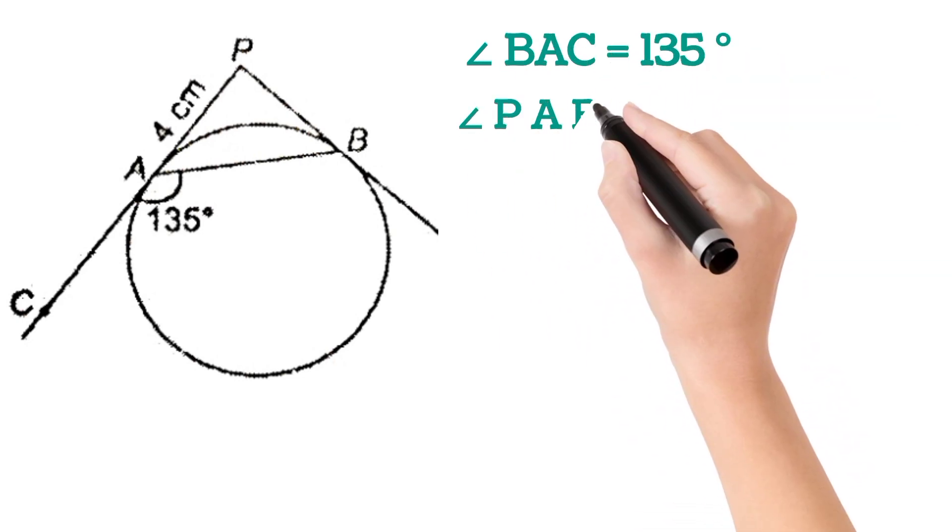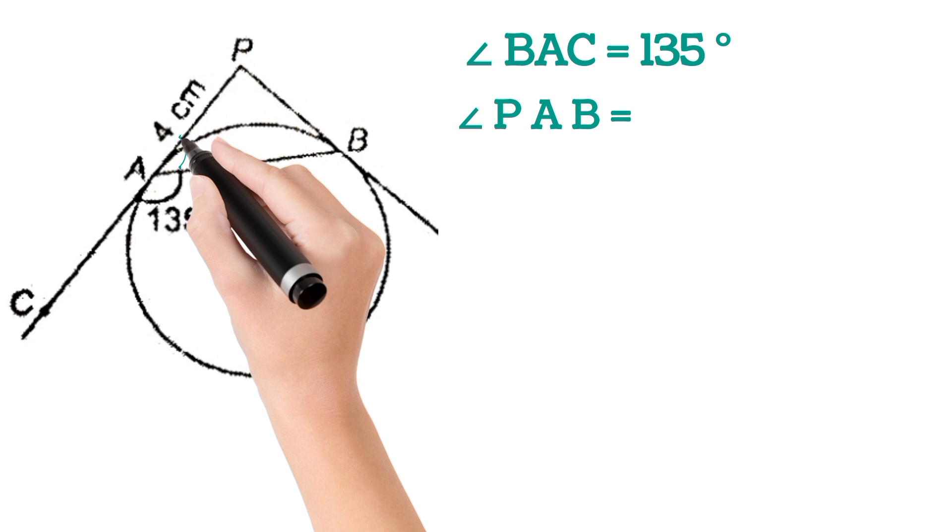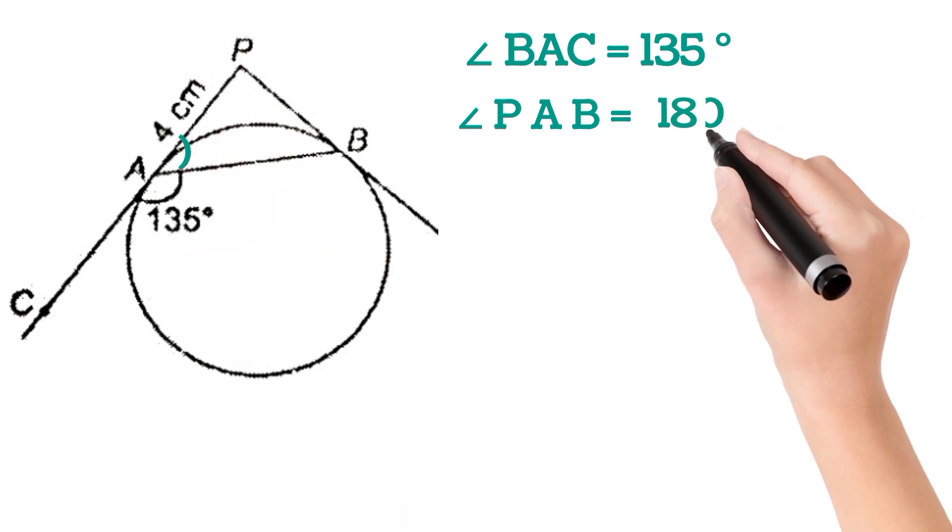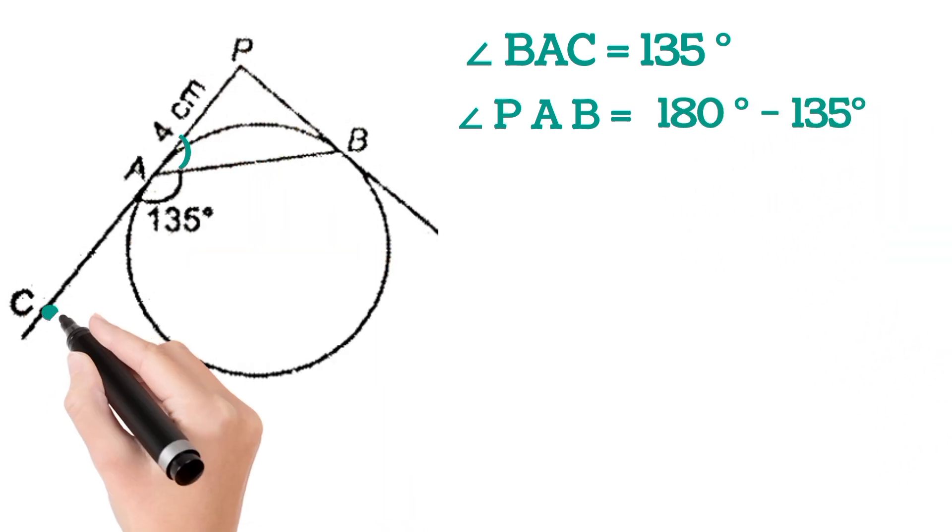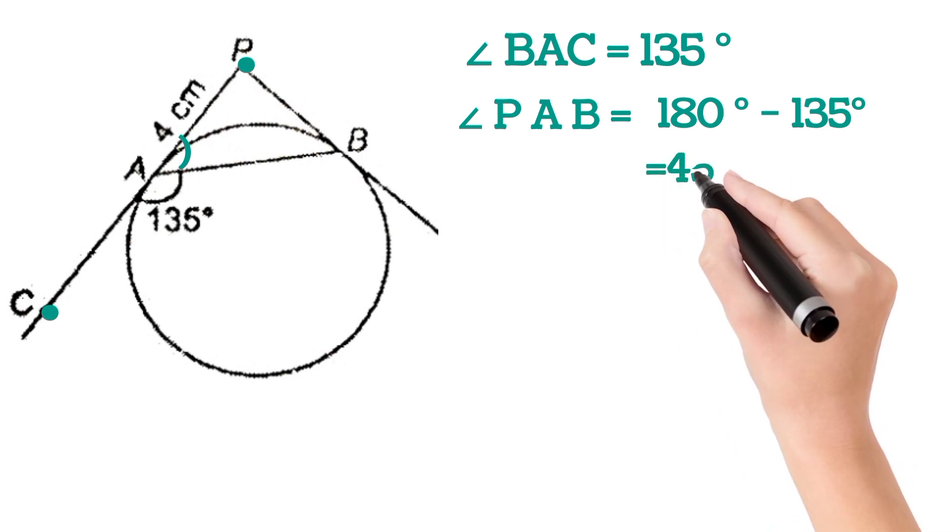Angle PAB will be 180 minus 135 as PC is a straight line, so this will be 45 degrees.